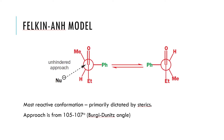One of the most successful models is the Felkin-Anh model. The Felkin-Anh model gives us a fairly good understanding of how the reactivity of the conformer plays an important role. The Felkin-Anh model says that you draw out the carbonyl compound where you put the largest group perpendicular to the carbonyl group. This will occur in two distinct conformations.